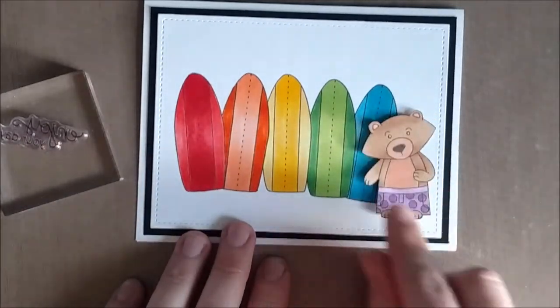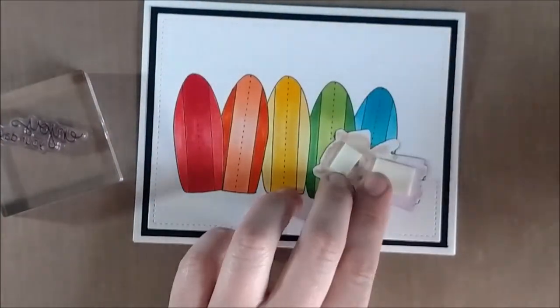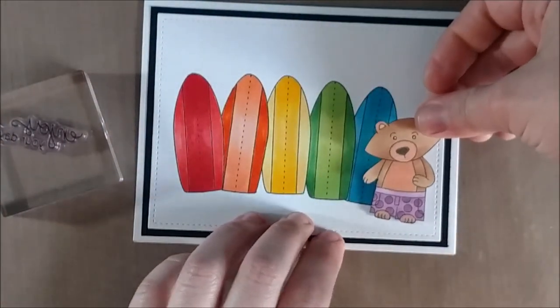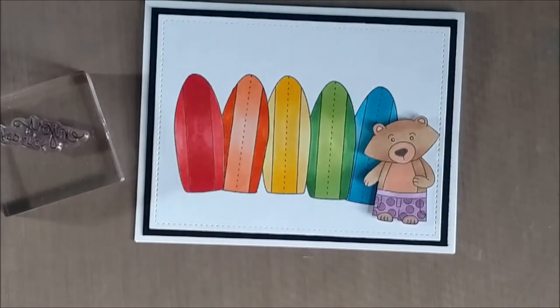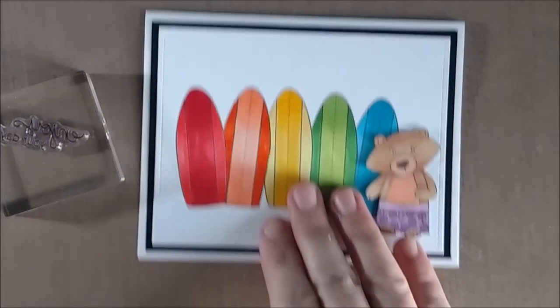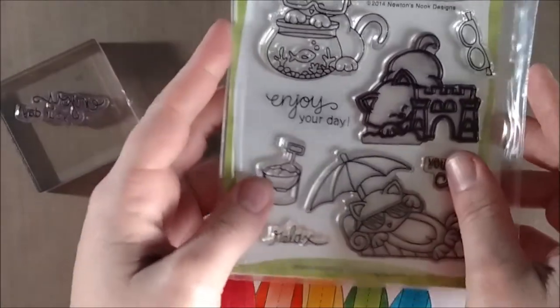I decided to mount the stitched rectangle panel onto black cardstock. I find that black cardstock really helps to bring out the rainbow effect, whereas if you choose one of the colors in the rainbow, it kind of takes away from it and doesn't quite leave that kind of heavy impact punch of the rainbow effect.